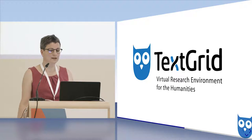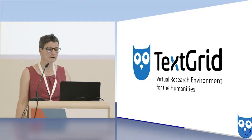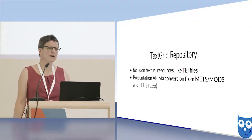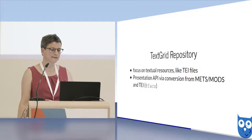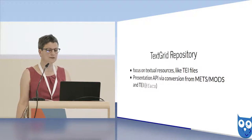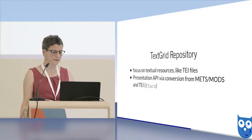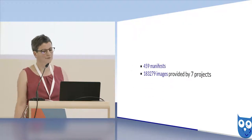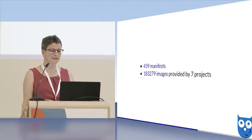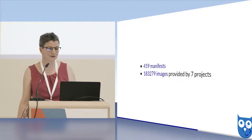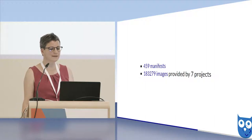The DARIAH.de repository is a more generic version of the TextCrit repository, which we started first and recommend for textual data like digital scholarly editions. TextCrit offers a long-term archive to explore textual resources and their facsimiles with the help of IIIF via the DGLib image server. The Presentation API is prepared by converting METS, MODS, or TEI files and uses a specific metadata schema based on FRBR. Currently, we are hosting 459 manifests for the Presentation API, and our image server provides access to 183,000 resources.